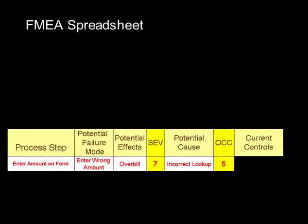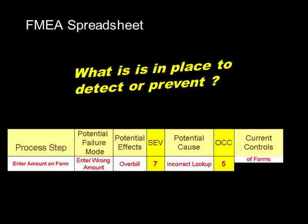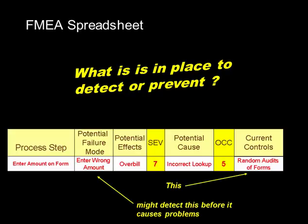We move on to controls, in which case we're going to ask what is in place to detect or prevent a failure. So a random audit of forms might detect that we've entered the wrong amount before it really causes problems.